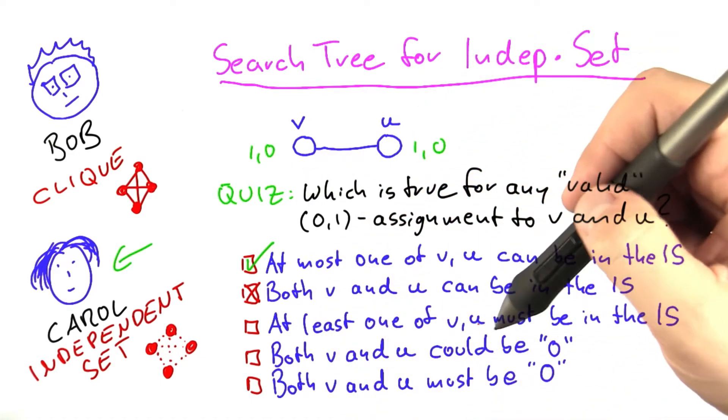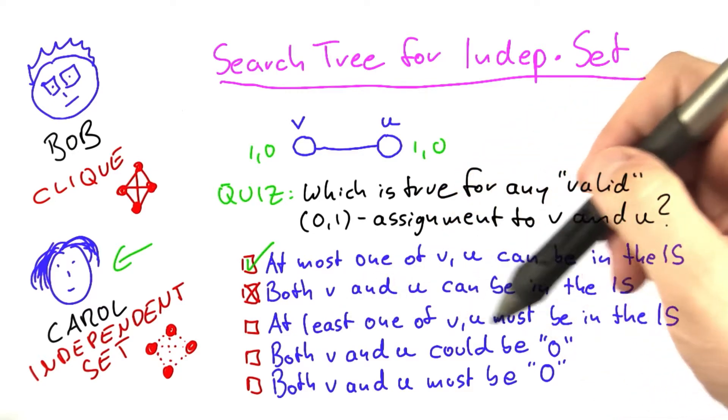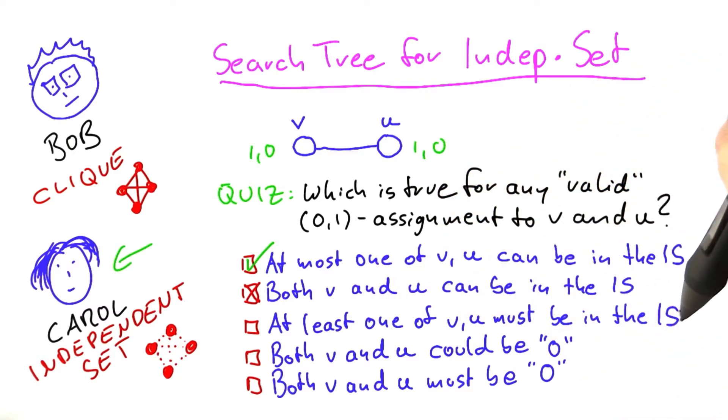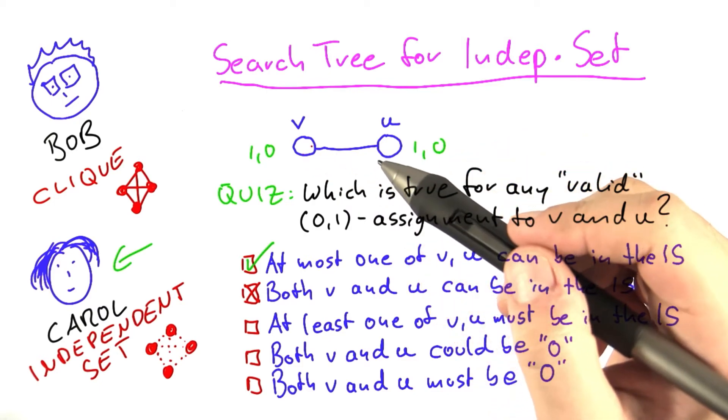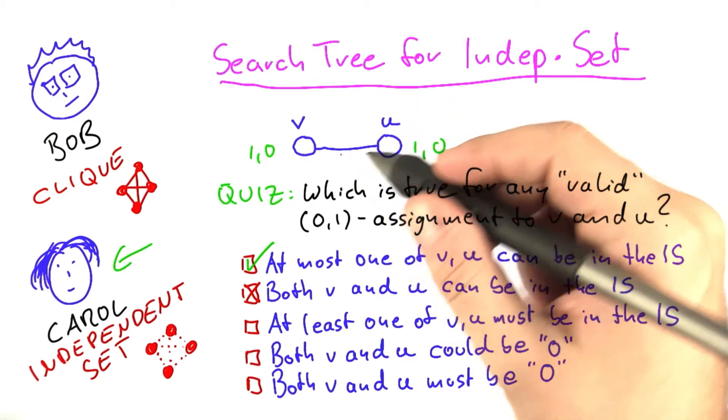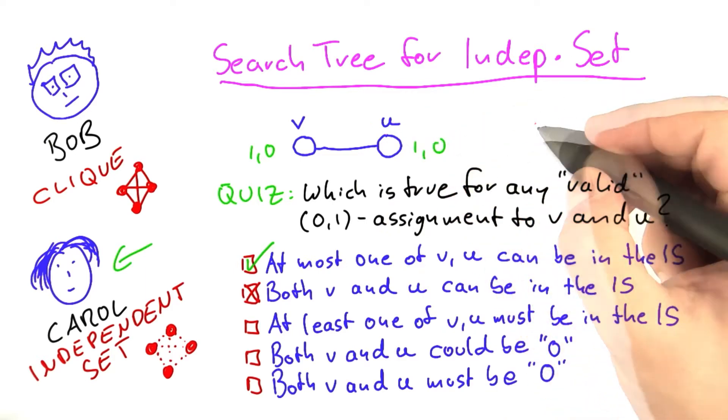It's not the case that both vertices can be in the independent set because they are connected to each other. This one here might have been a little bit more tricky. At least one of the two vertices must be in the independent set. Now, you might be inclined to think that because we are looking for a maximum size independent set, but actually that is not the case, and I will give you a little example for that.